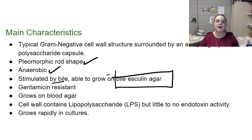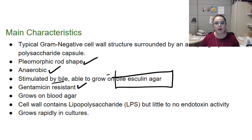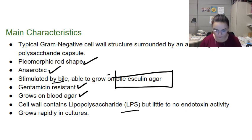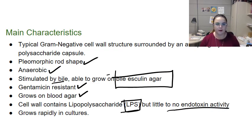This is an organism with intense antibiotic resistance — it's really becoming a bit of a problem. One of the antibiotics it's already resistant to is gentamicin, putting it in the same category as some of the enterococci, where organisms living in our gastrointestinal tract are exposed to so many antibiotics that we see increased resistance. It grows well on blood agar in addition to esculin agar. The cell wall does contain LPS because it's a gram-negative organism, but in this case the LPS has very little to no endotoxin activity. And it grows really rapidly, both in culture and in our bodies.